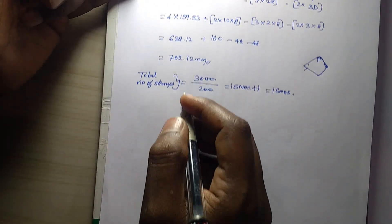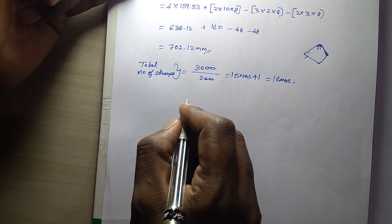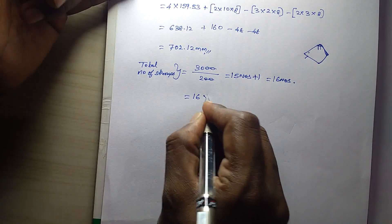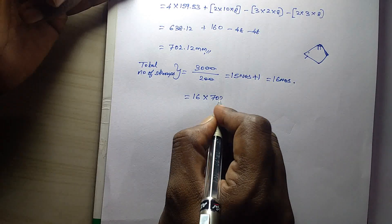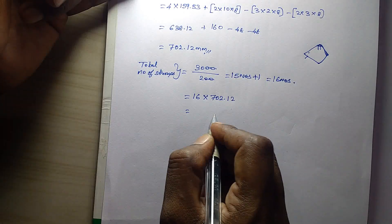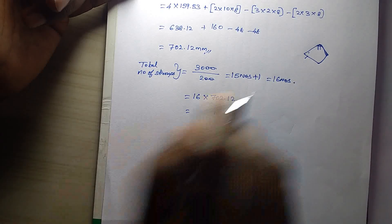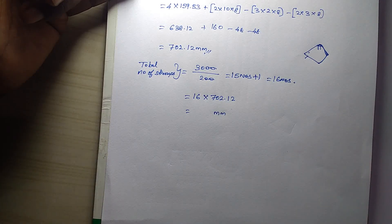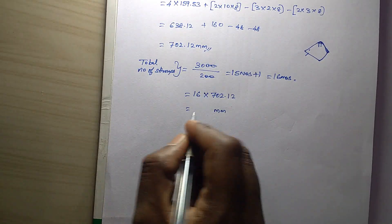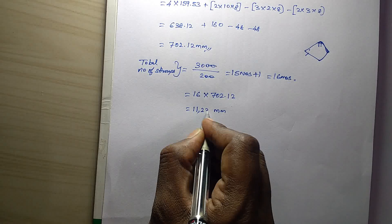You can put in your number of stirrups. Here calculate: 16 × 702.12. We add 16 into 702.12. How much? We add. Multiply to add. We add value — value 11,233mm.